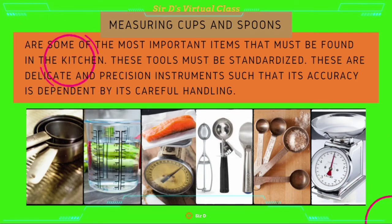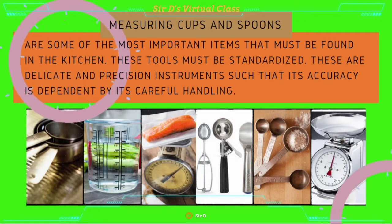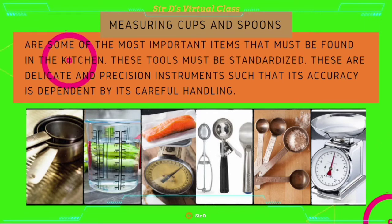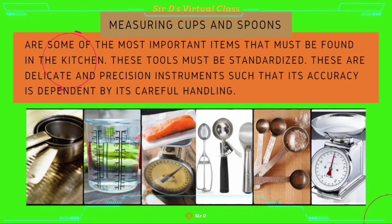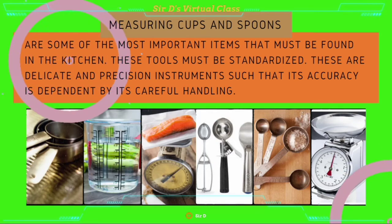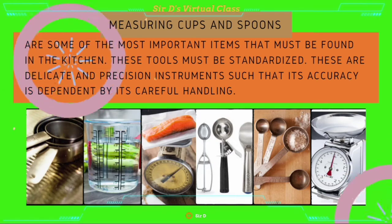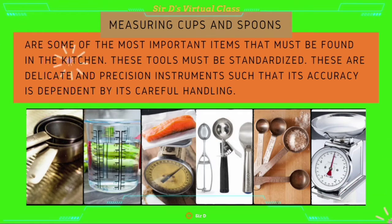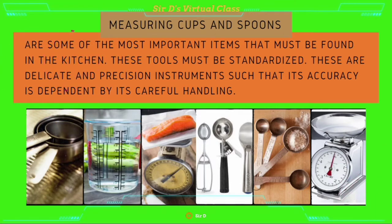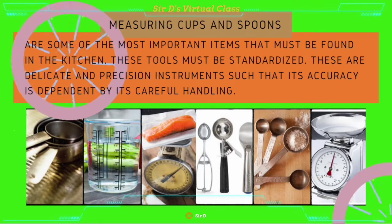Measuring spoons are used for measuring small quantities of ingredients. The household scale, unlike the portion scale, is used to weigh heavier and larger quantities of ingredients, usually in kilograms.